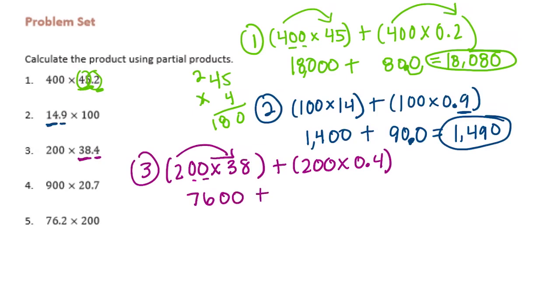Plus 2 times 0.4, but again we need to divide by 10 to make that just 80. So 7,600 plus 80 would be equal to 7,680.